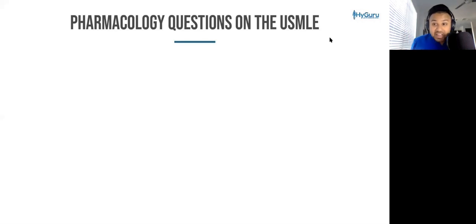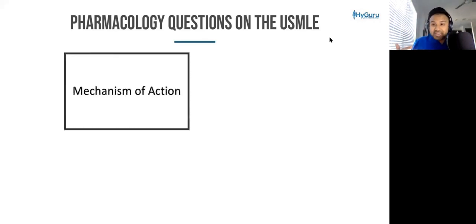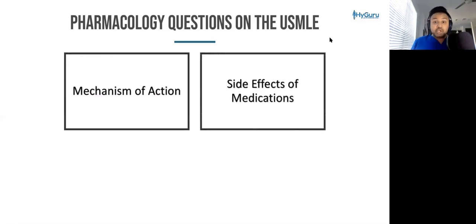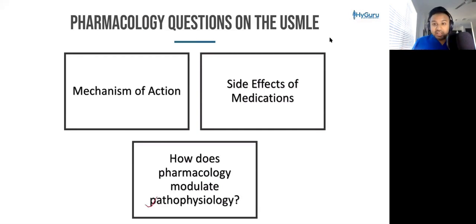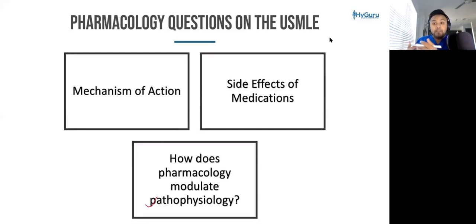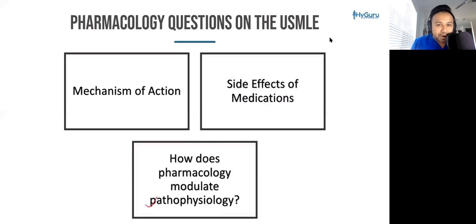When you're thinking about pharmacology questions on the USMLE, it boils down to some of these question stems. Number one: what is the mechanism of action? Number two: what is the side effect of this medication? And number three: how does this pharmacological agent modulate the pathophysiology? A pathophysiology is going to have a certain mechanism, and the pharmacology modulates the mechanism behind the pathophysiology. This is an advanced concept, but we're going to really dive in deeper throughout this course.